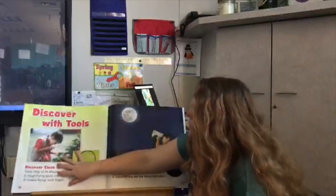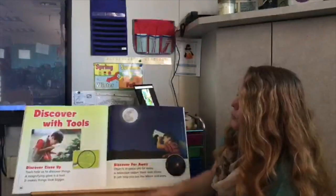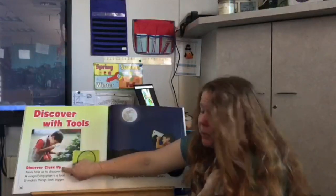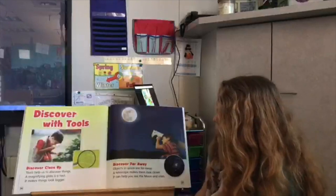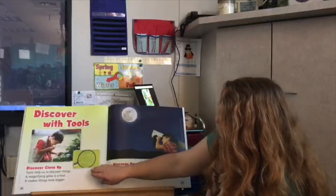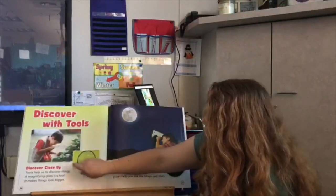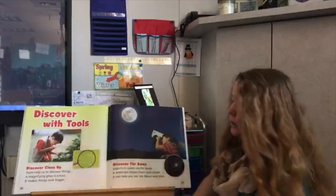Very nice. All right. Our second story is Discover with Tools. Discover up close is our first subheading. Tools help us to discover things. A magnifying glass is a tool. It makes things look bigger. There he is. The magnifying glass.